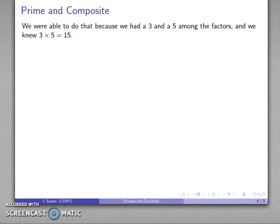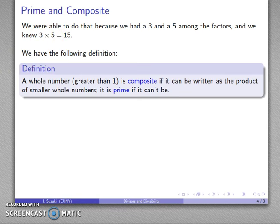So as soon as I have this thing as a number times 15, I know that it's divisible by 15. Now, if you look closely, that really only worked because we had a 3 and a 5 among the factors. And we happen to know 3 times 5 is equal to 15. And what that suggests is this property, that I can write a number as a product of smaller numbers, is going to be important.